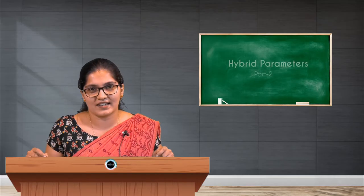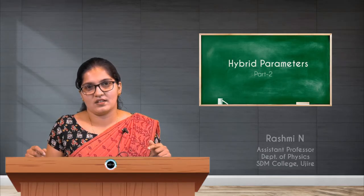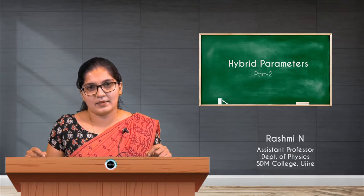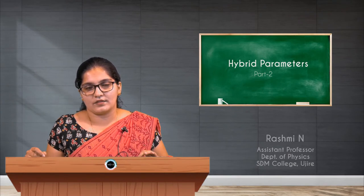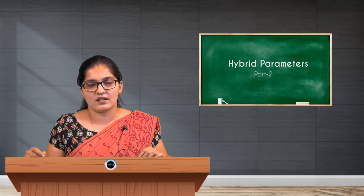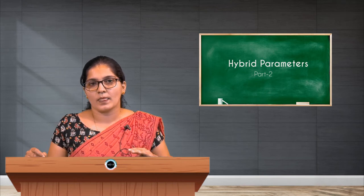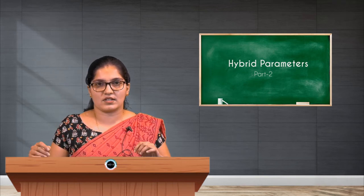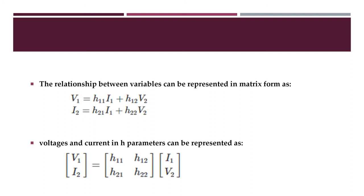Hello students, welcome to the session. The topic is hybrid parameter from paper 6 of unit 3, analog electronics. In the previous session we were studying about the hybrid parameter, how to represent the hybrid parameter, what is a hybrid parameter, and the two port network. So let us continue with that.